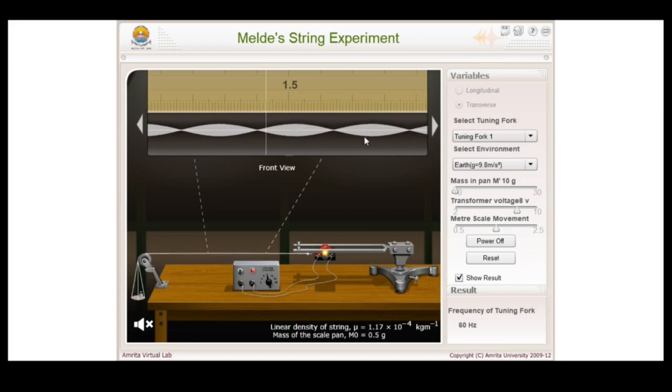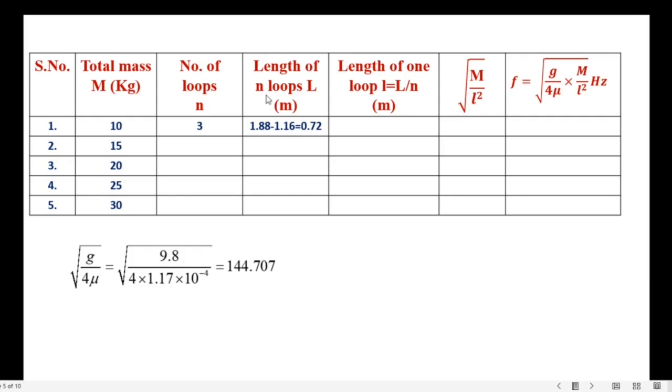Now let us measure the length of the three loops. For that I aligned the pointer at the first node and noted down the scale position. It is 1.16. Next I align the pointer at the last node and here the reading is 1.88. Enter reading in the table: 1.88 minus 1.16 gives 0.72. This is length of three loops.